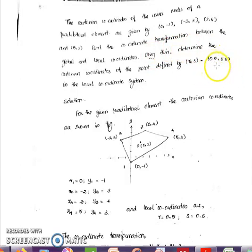Here Cartesian coordinate is 0.5, 0.5 in local coordinates. This is the Cartesian problem. It consists of nodes A, B, C, D labeled as 1, 2, 3, 4. Now write the coordinate values: x1 = 0, y1 = -1, x2 = -2, y2 = 3, x3 = 2, y3 = 4, x4 = 5, y4 = 3.